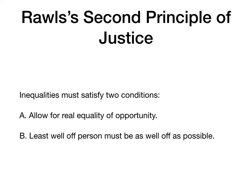In this lecture I want to talk more about what Rawls' second principle of justice — the one that's supposed to govern inequality, supposed to state what inequalities society should allow — means. Last time I said Rawls' second principle says inequalities have to satisfy two conditions: they have to allow for real equality of opportunity, and the least well-off person must be as well off as possible.